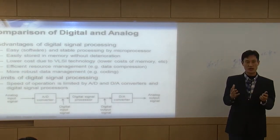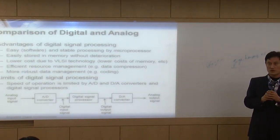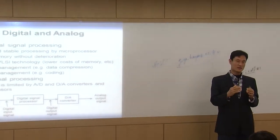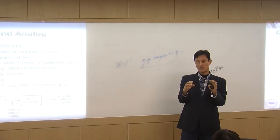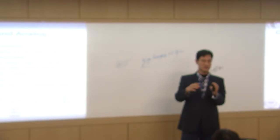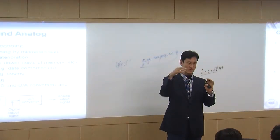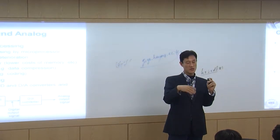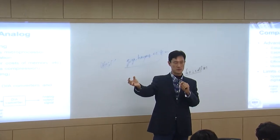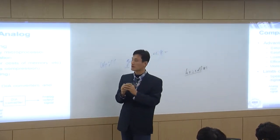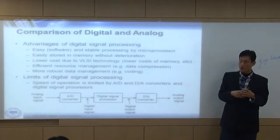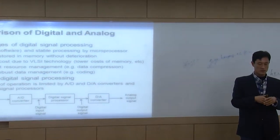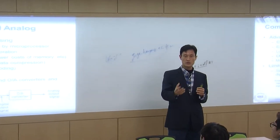Another important advantage is that digital signals are stable, reliable, and robust. Analog signals are very difficult to handle — if you have noise or error in analog information, it's very difficult to remove it. In digital signals, if there's an error, it's relatively much easier to remove the noise or error component and recover the original information. That's also why coding is possible.